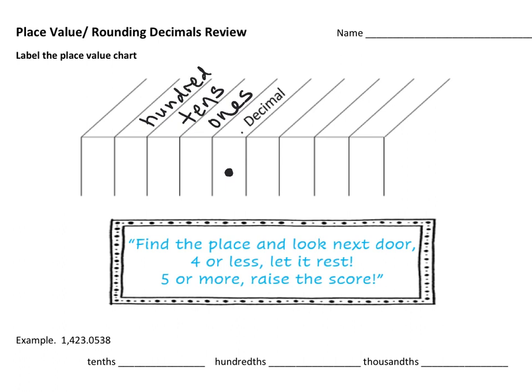Hundreds. And if you go one more, that one is thousands. So if I had some number like 2,346, we're saying two thousands, three in the hundred spot, four in the ten spot, six in the one spot.